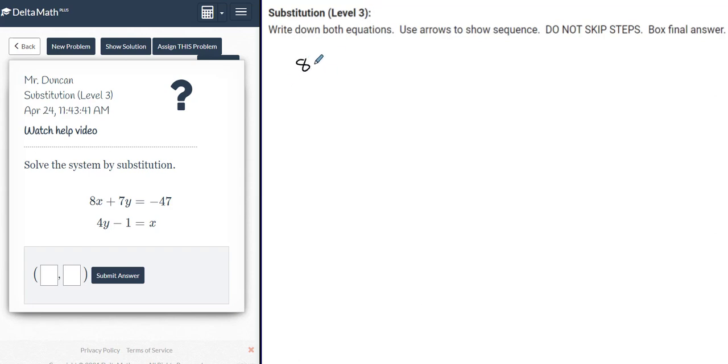Let's write down both equations. 8x plus 7y is equal to negative 47. Underneath that, we have 4y minus 1 is equal to x. The goal with substitution is to look for the variable that's isolated.